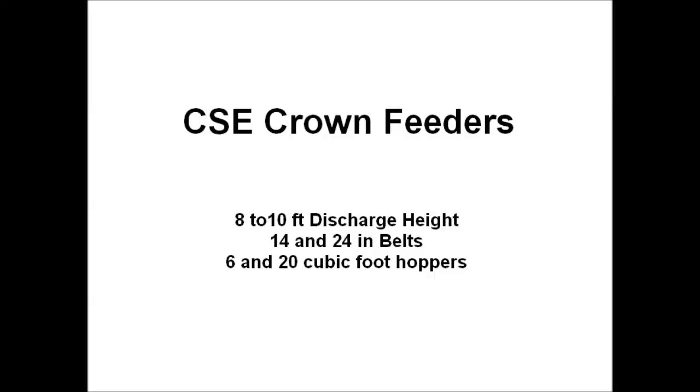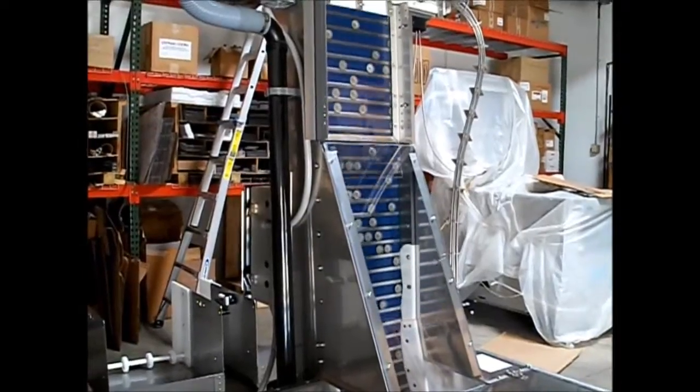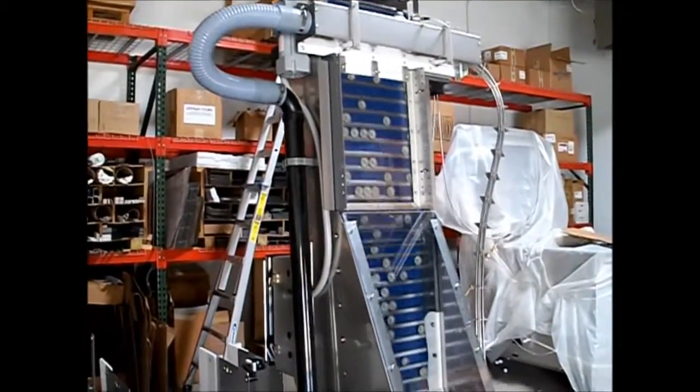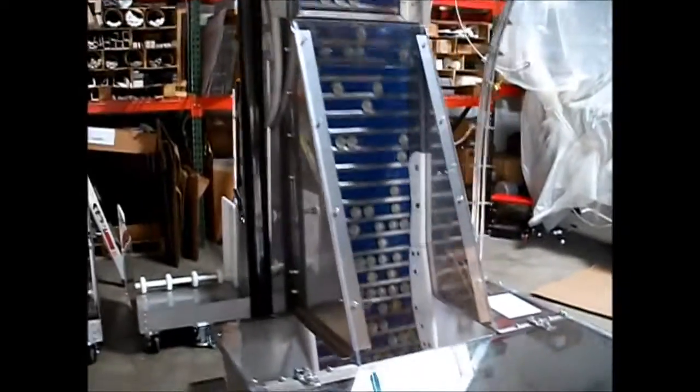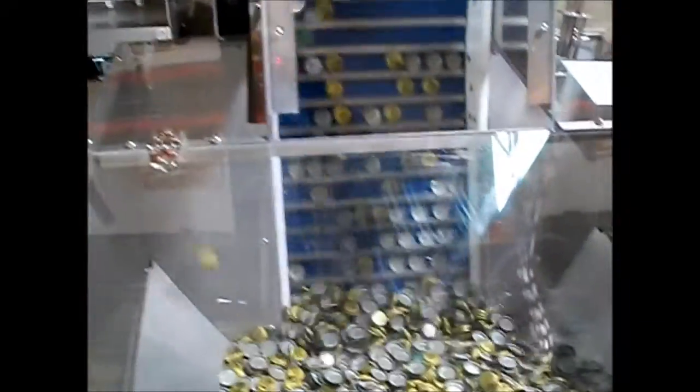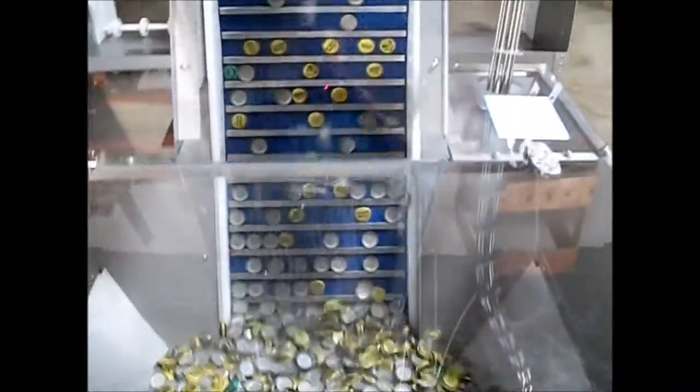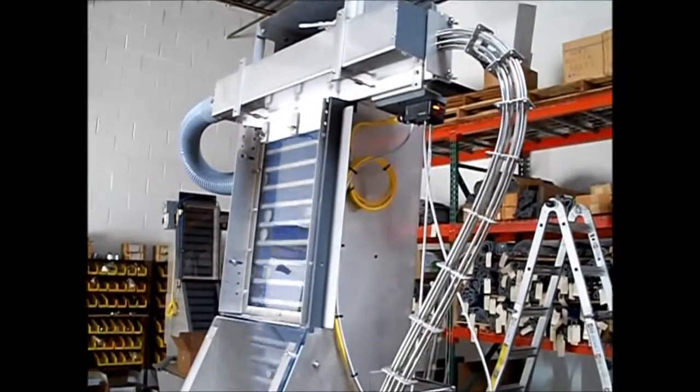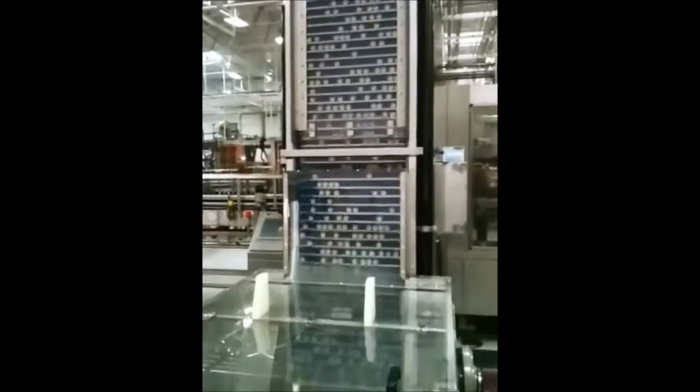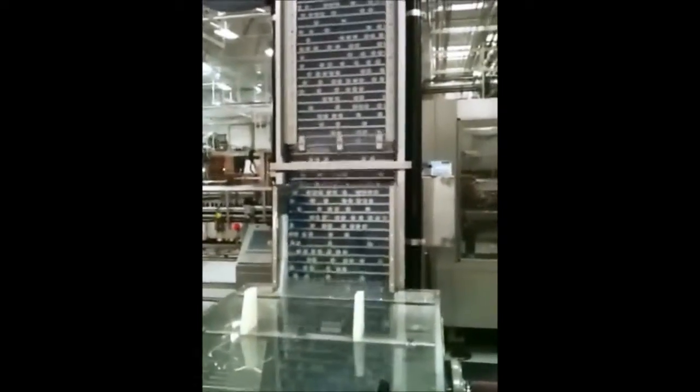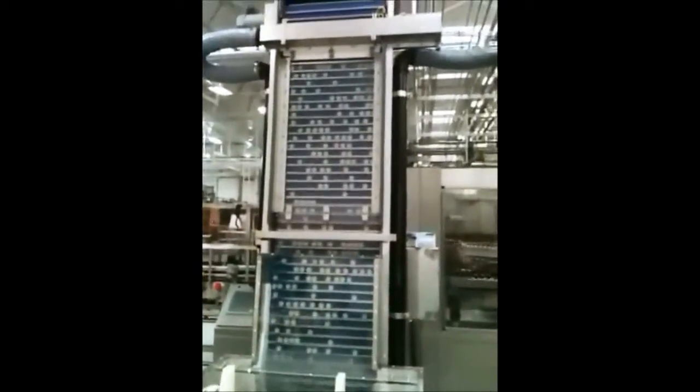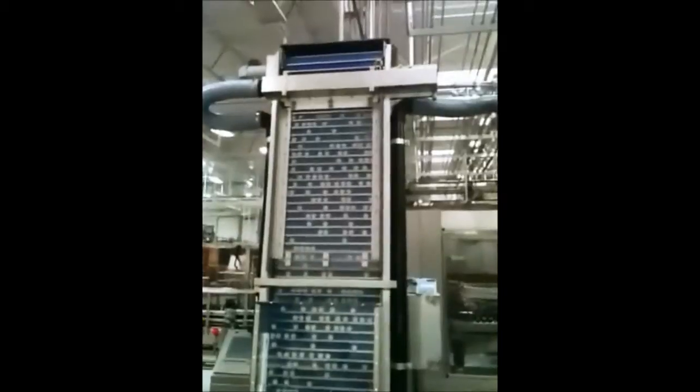One of the last items I'd like to show you is a difficult application that we've had a lot of success with. It's crown sorting. If you're not familiar with that, crowns are beer bottle caps. Because they're metal and quite light and have sharp edges, they pose special challenges for sorting. But we've got a number of customers who have had significant improvement in line performance as a result of switching from traditional disc style sorter to our type of belt sorter.